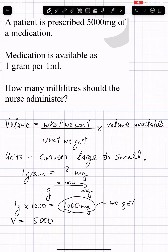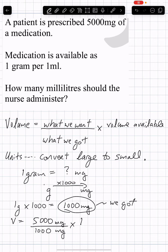...that's what we want as prescribed — 5,000 mg — divided by 1,000 mg, multiplied by the volume available, which is 1 mL.